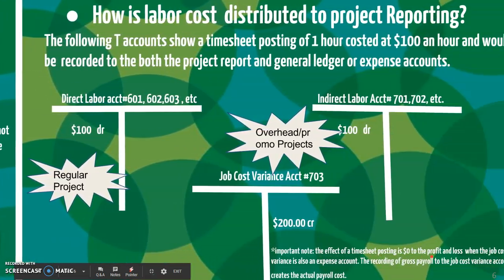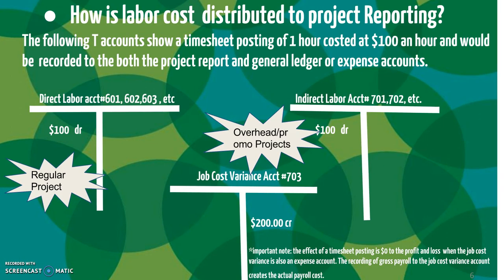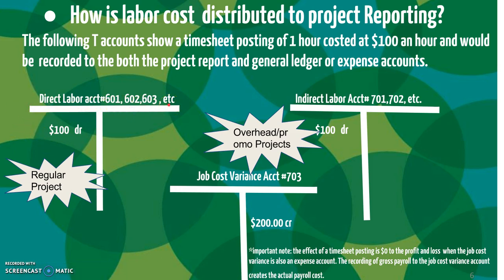Here is an example of T-accounts showing how labor cost is distributed to project reporting. The T-accounts show a timesheet posting of one hour for a regular project and one hour for an overhead project at $100 an hour, recorded to both the project report and general ledger expense accounts at the time of timesheet posting. The debit side of the transaction is $100 to various accounts — typically 601, 602, 603 — all requiring regular project numbers. Overhead or promotional projects have indirect labor accounts for the same $100 for that hour worked. When posted, the offset is a $200 credit to the job cost variance account.